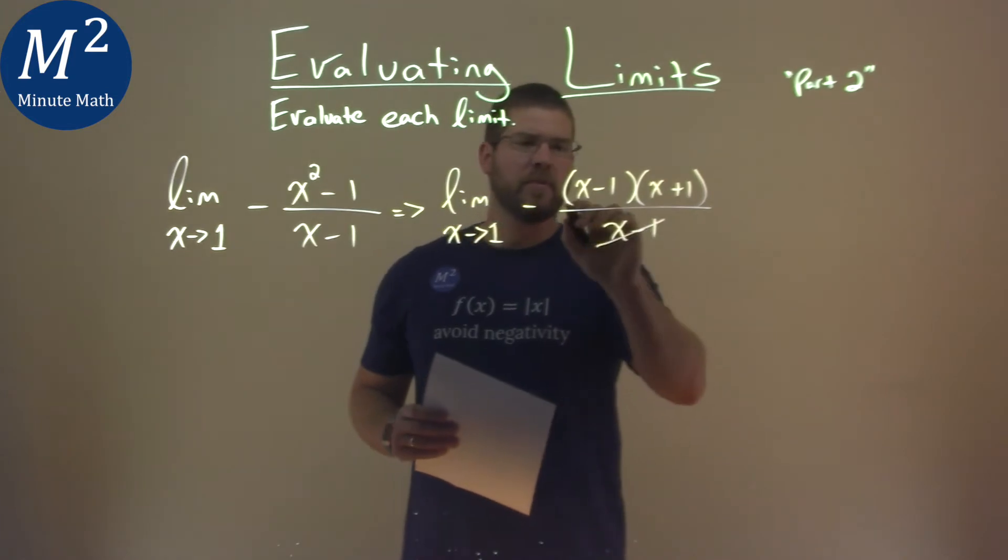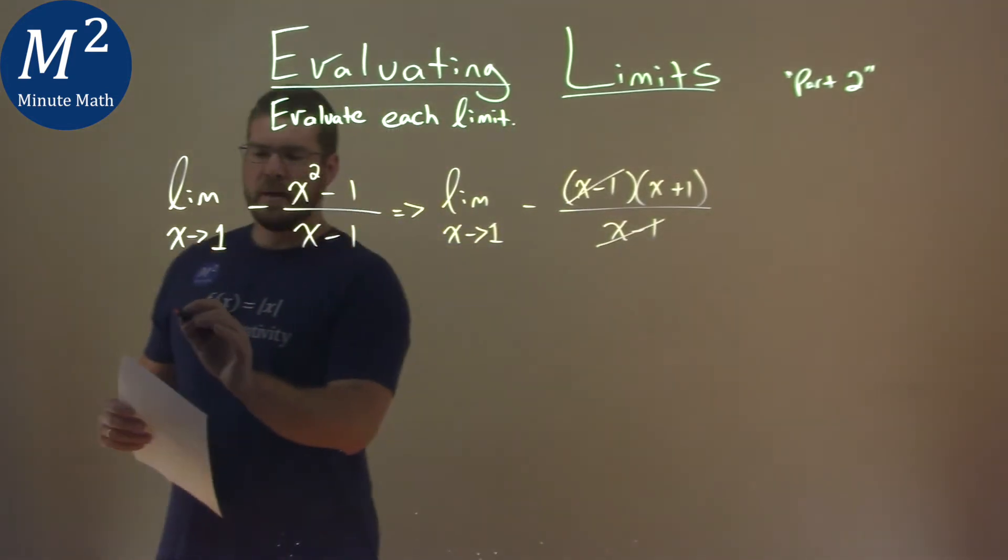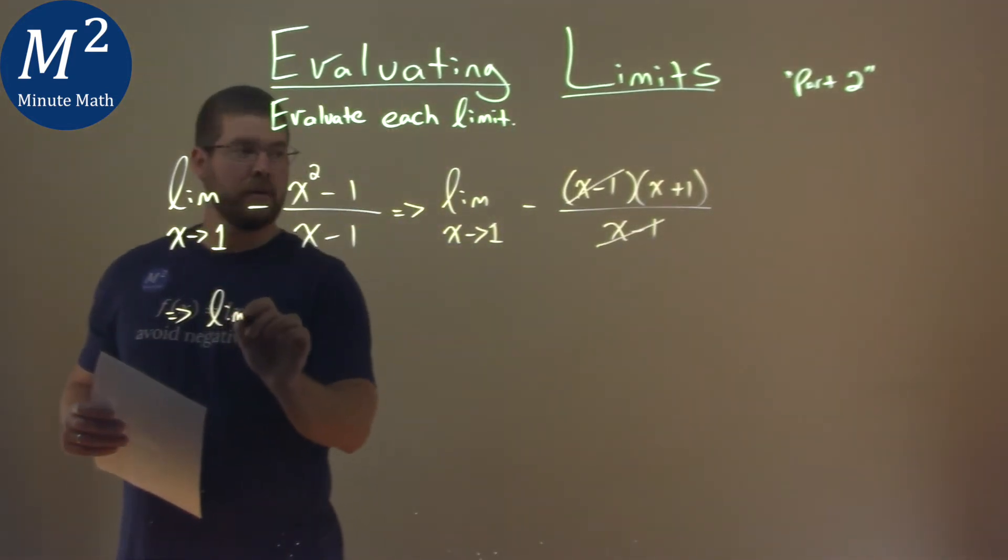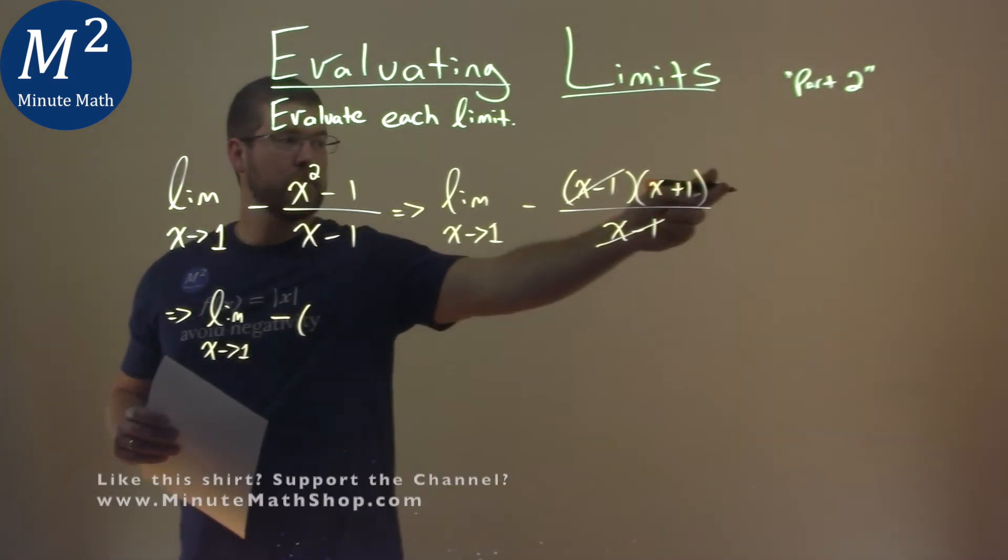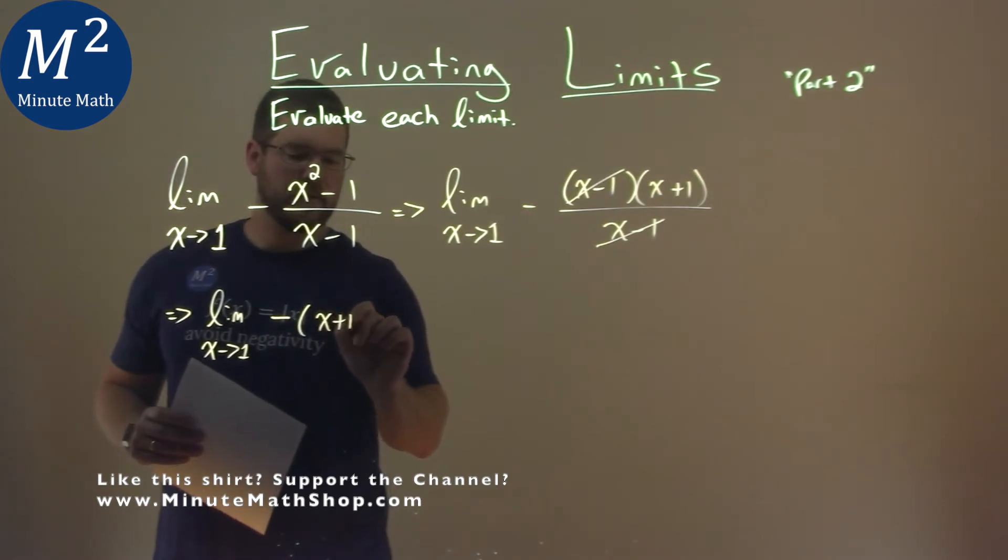We can see the x minus 1 cancel and so to put that down here, we have the limit now as x approaches 1 of negative in parentheses just that x plus 1 part.